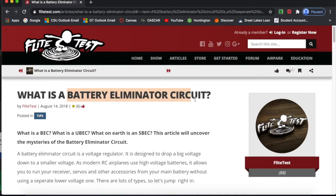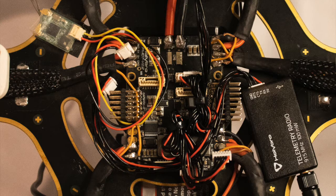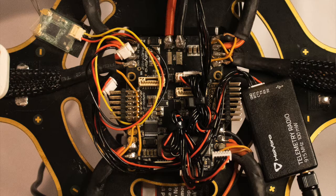These ESCs do not have a battery-eliminating circuit, or BEC, which is a constant power supply typically used for onboard electronics. In this case, a BEC is unnecessary because this drone uses a separate power distribution board to supply power to all onboard electronics and the ESCs and motors.